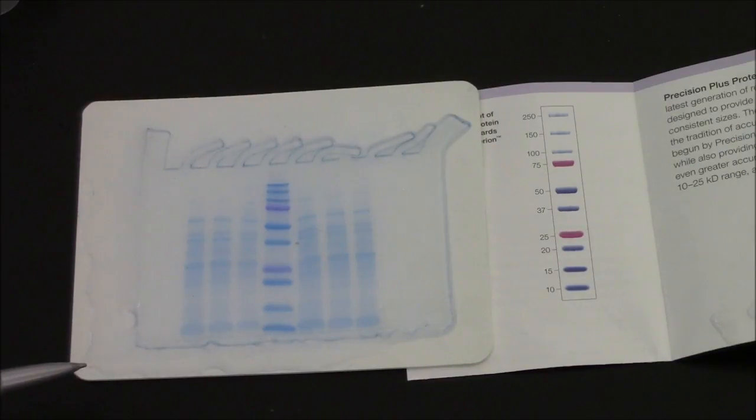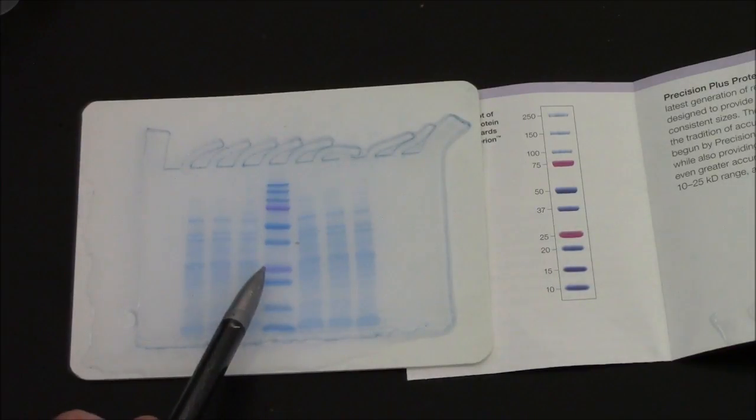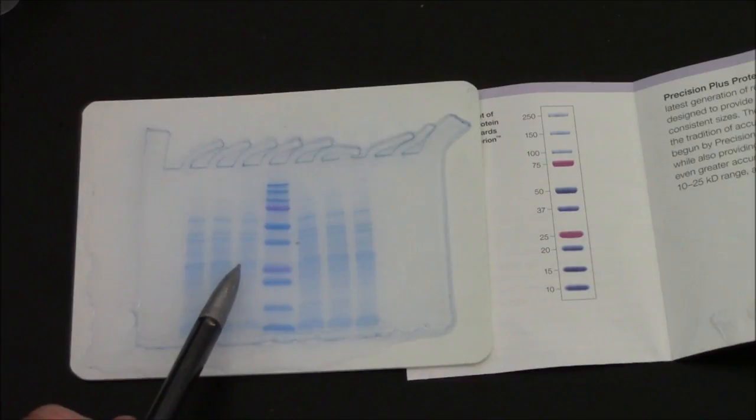The beta-lactamase itself, the enzyme we're looking for, is 27 kilodaltons. So I go to the 25 and the 37. Here's the 25, here's the 37. I'm thinking it's this band right here.